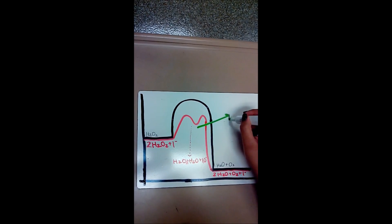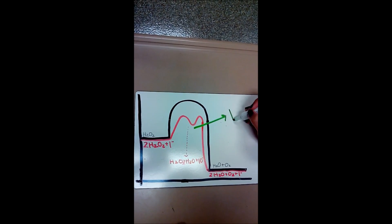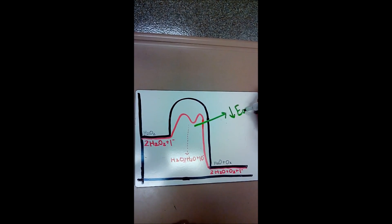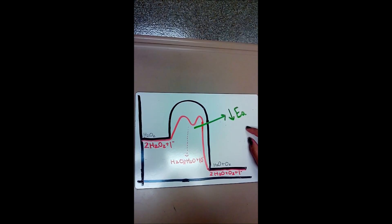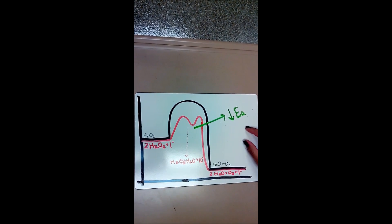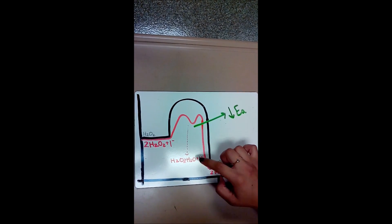Also, as we said before, adding a catalyst lowers the activation energy. But although it lowers the activation energy, the delta H remains the same for both equations.